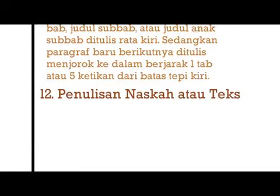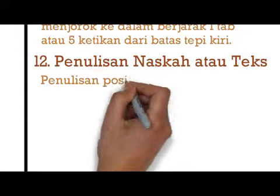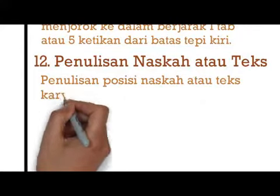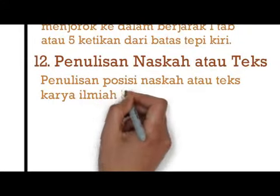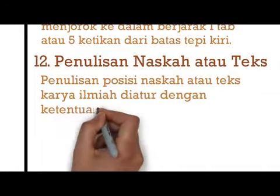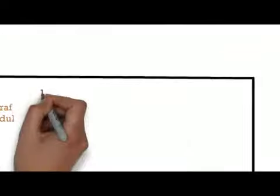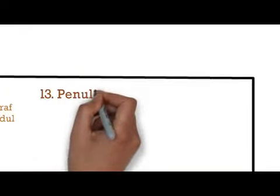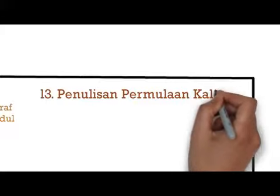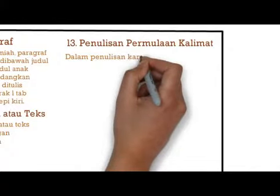Yang kedua belas, penulisan naskah dan teks. Posisi naskah atau teks karya ilmiah diatur dengan ketentuan rata kiri-kanan. Pengecualian berlaku ketika memulai paragraf baru, memasukkan gambar, memasukkan tabel, atau hal-hal khusus lainnya. Yang ketiga belas, penulisan permulaan kalimat. Permulaan kalimat ditulis dengan menggunakan huruf besar pada awal kata dan diakhiri dengan tanda titik.